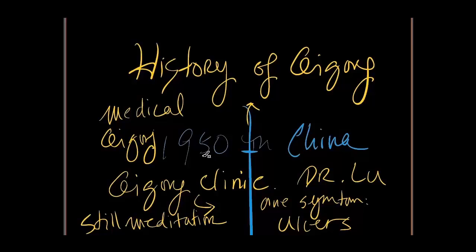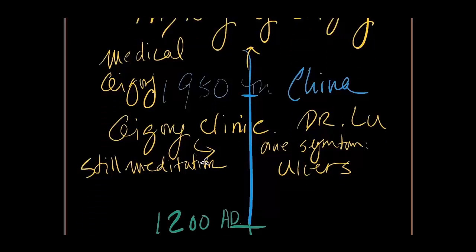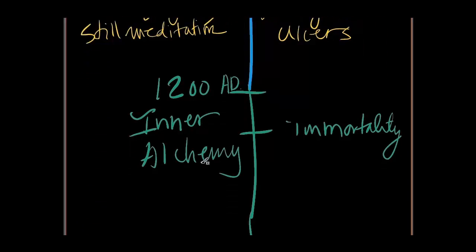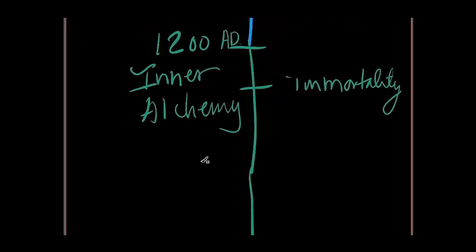Now if you jump back to 1200 AD during the Song Dynasty, there is not much mention of Qi Gong. Rather it is called Neidan, Inner Alchemy.